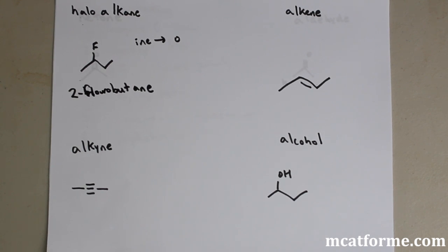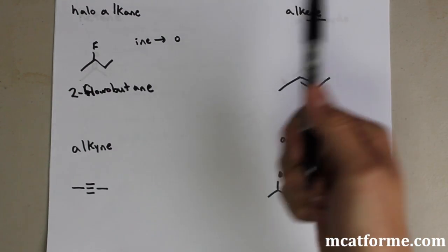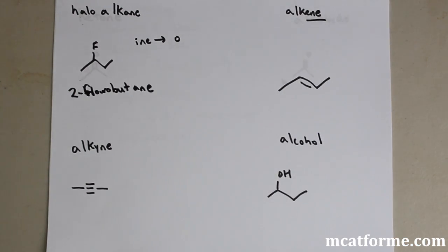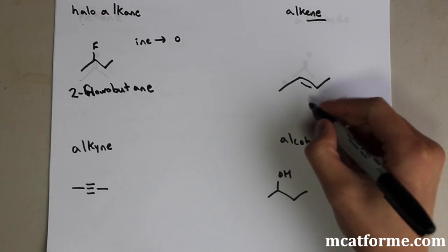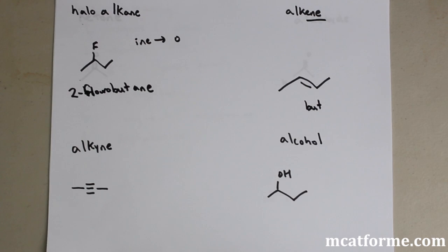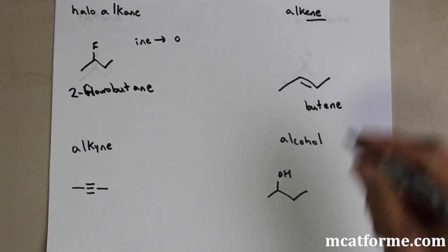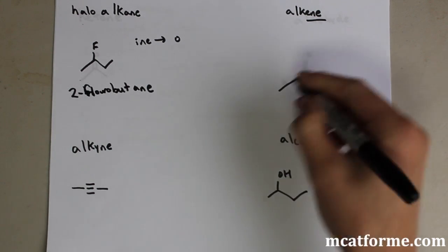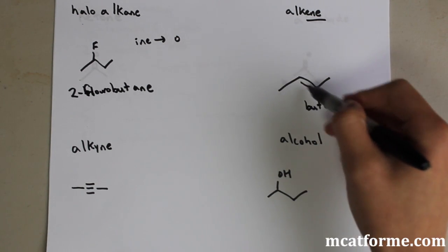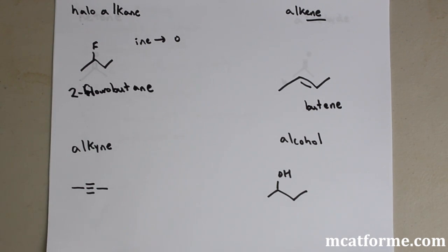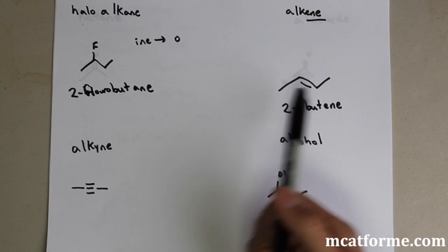Next is alkenes. Remember for alkane the suffix was '-ane' — for alkene it's going to be '-ene'. There are four carbons, so the prefix is 'but', giving us but-ene. But we have to know where the double bond is because it could be at carbon one, two, or three. We number it similarly to a substituent — in this case it's on carbon two, so it's 2-butene.